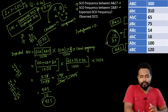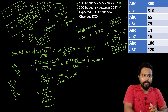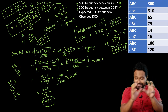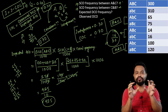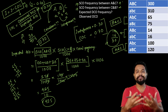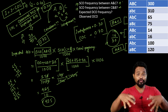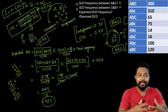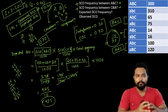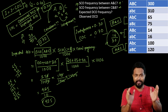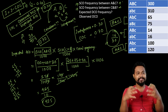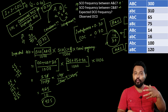So the coefficient of coincidence is 0.70, and therefore interference I = 1 − 0.70 = 0.30. This means the interference value is 0.30, indicating partial interference. Double crossover frequency corresponds to a coincidence value of 0.70. This is the complete solution for interference and coincidence.